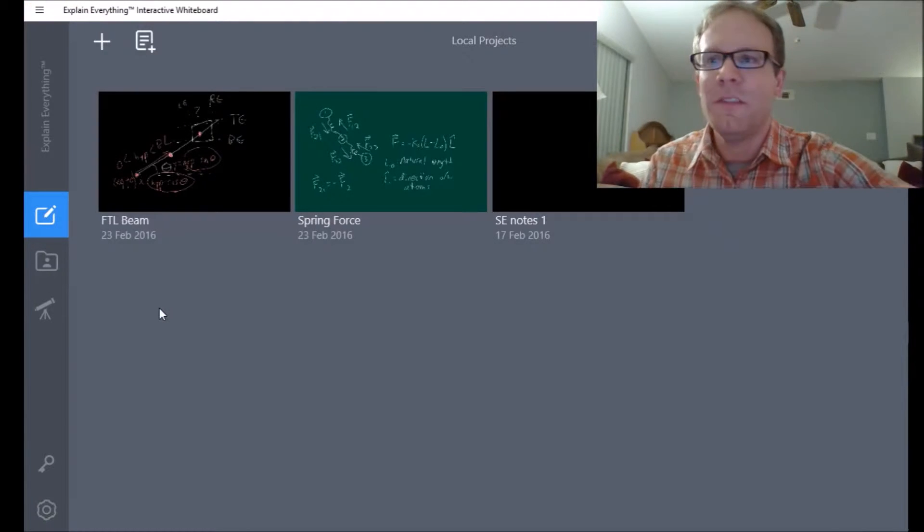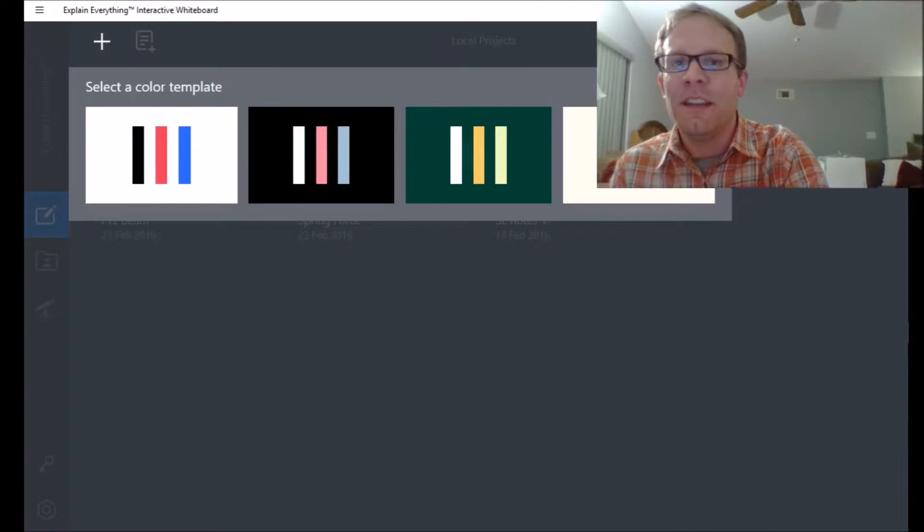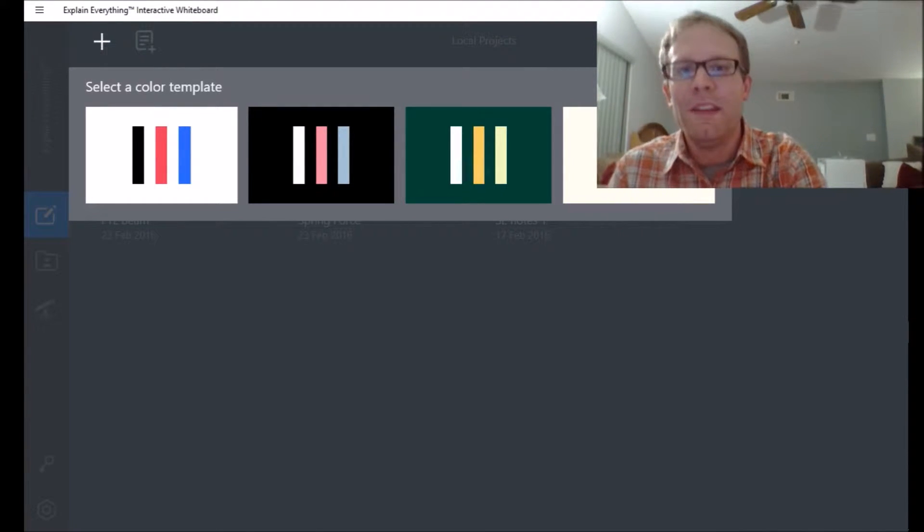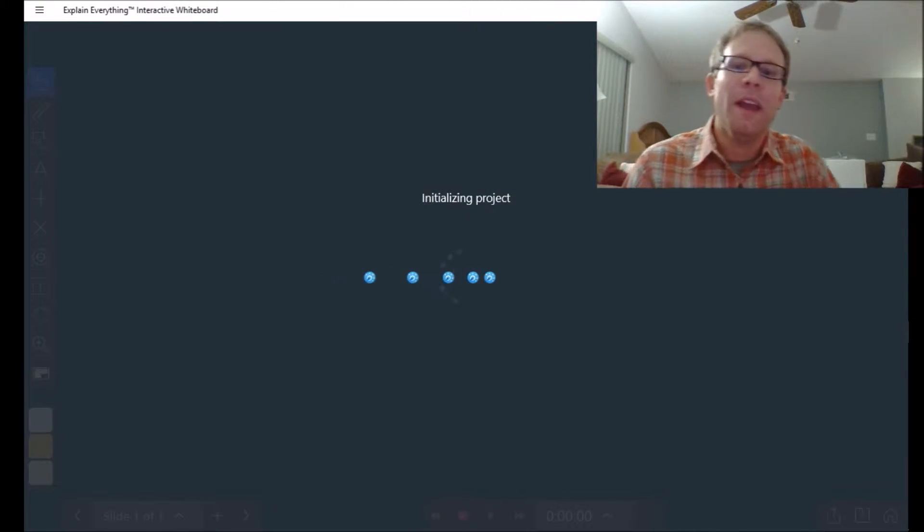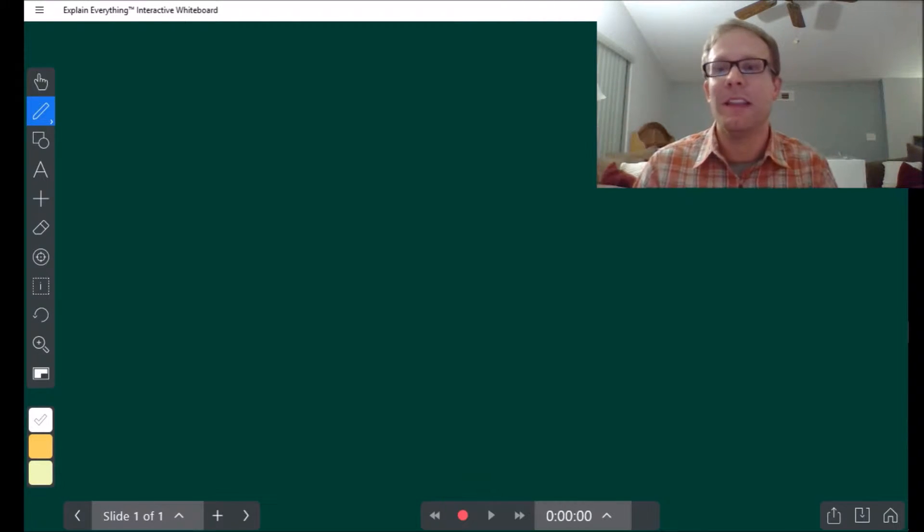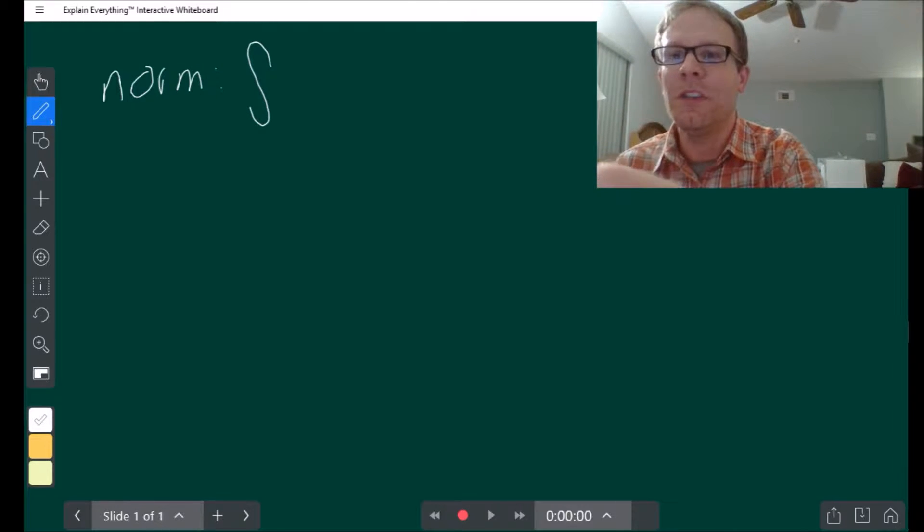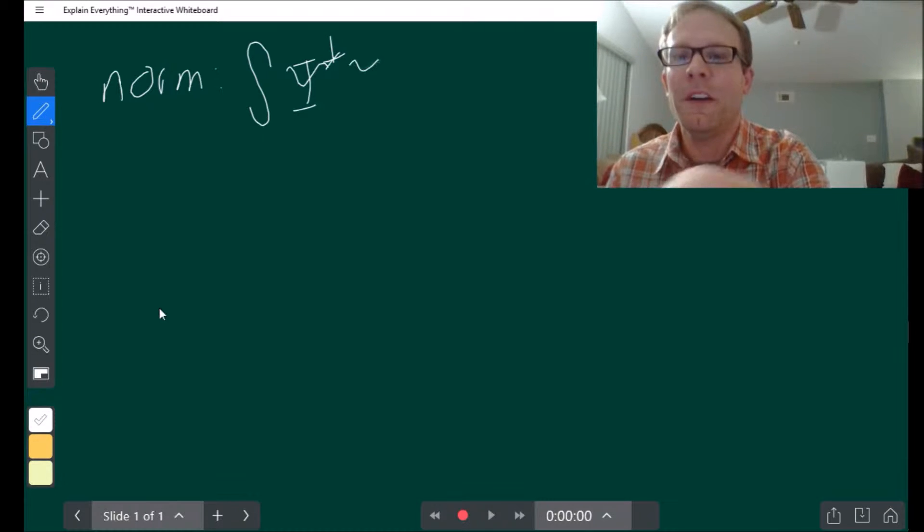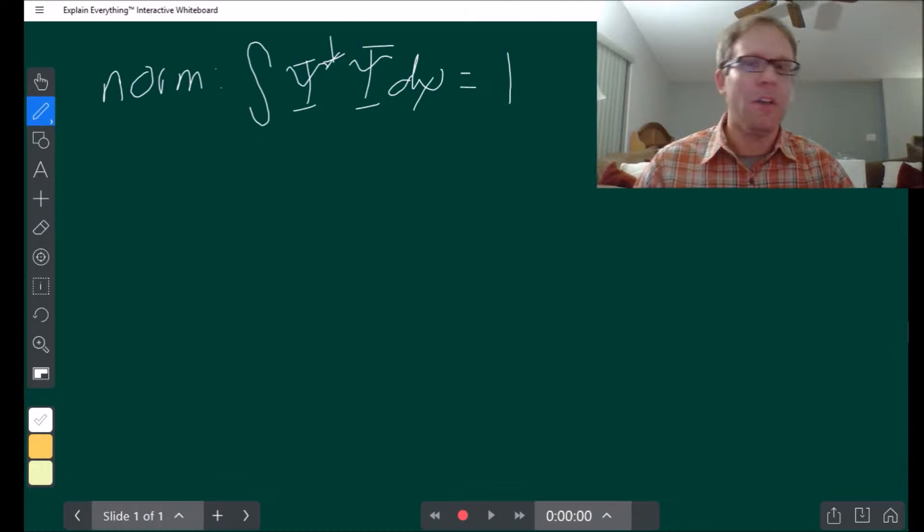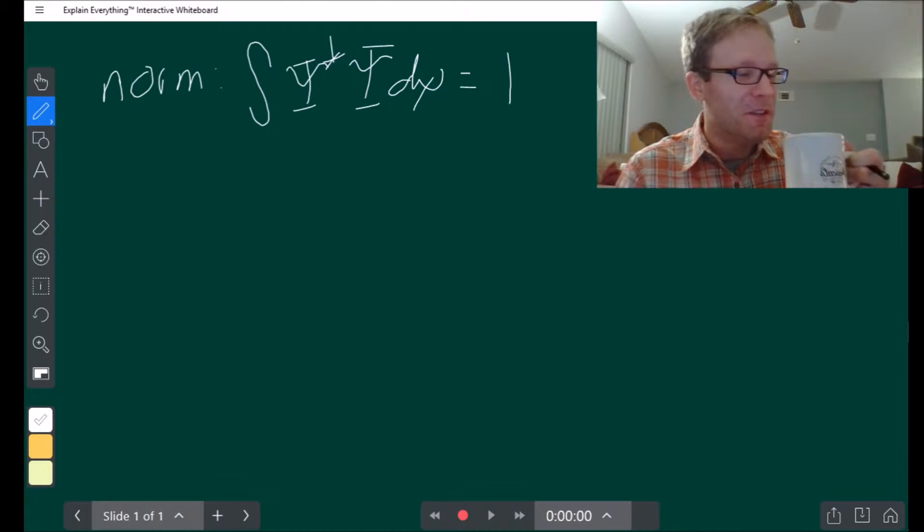The way expectation value works is that it's an average, so it's a weighted sum. The way a sum works when you've got something distributed like that is that it becomes an integral. We talked about earlier that you've got to have the wave function normalized. The idea behind the wave function being normalized is that the total area under the wave function times its complex conjugate has to equal one. It is cold season so I'm drinking some herbal tea here.